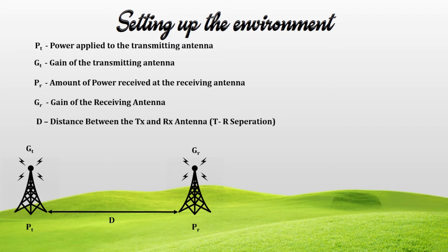So these are all the variables we need to define as a first stage to continue our derivations. PT stands for the power applied to the transmitting antenna. GT represents the gain of the transmitting antenna. PR represents the power received at the receiving antenna. GR represents the gain of the receiving antenna. And D represents the distance between the transmitter and receiving antenna, sometimes referred to as transmitter-receiver separation.